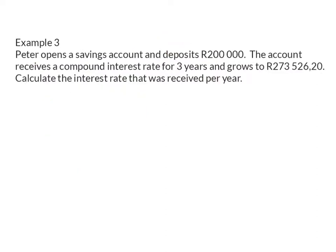Example 3: Peter opens a savings account and deposits R200,000. The account receives a compound interest rate for 3 years and grows to R273,526.20. Calculate the interest rate that was received per year. Here we were given Peter's starting amount as well as his final amount, and we were also given that this was for 3 years.